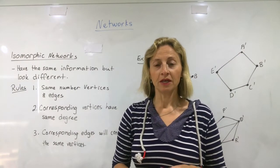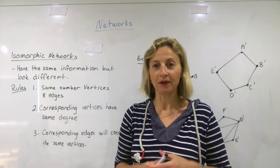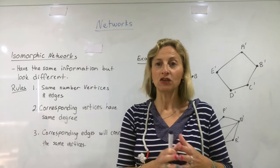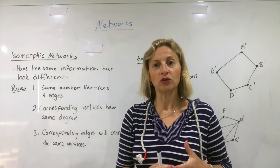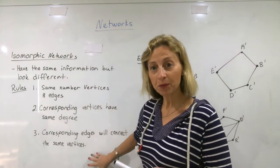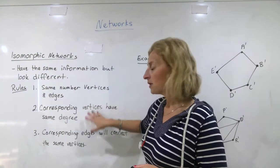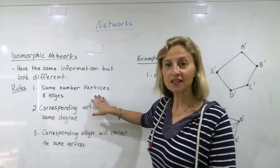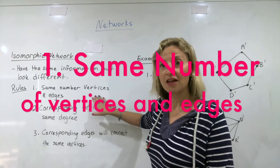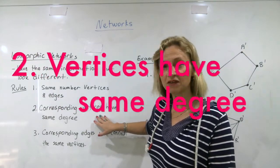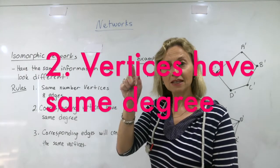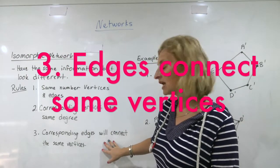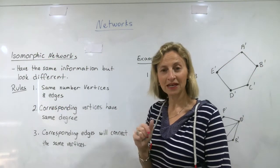Our next type of network is called isomorphic. The name sounds complicated, but it just means we have rearranged one network to make another while keeping the same structure. There are three rules to test whether networks are isomorphic: first, they must have the same number of vertices and edges; second, corresponding vertices must have the same degree; and third, corresponding edges must connect to the same vertices.